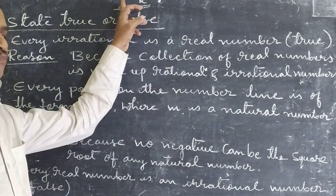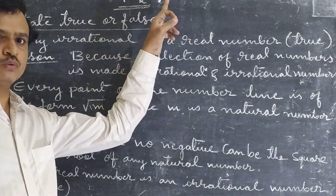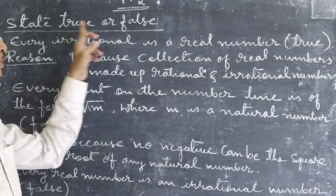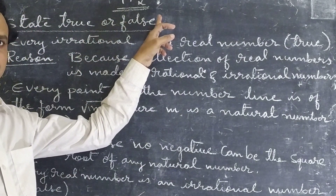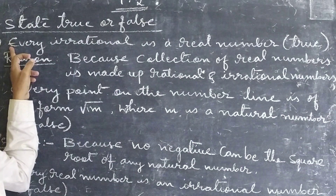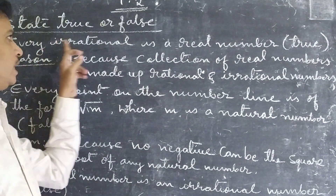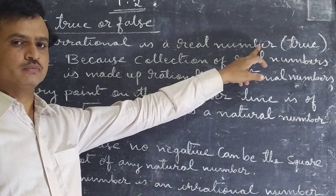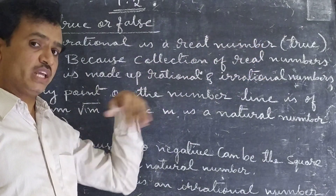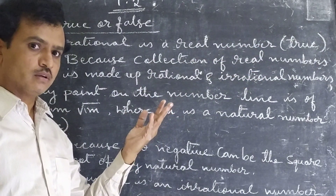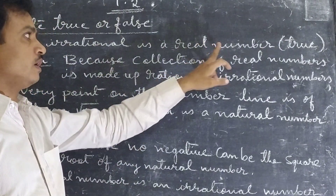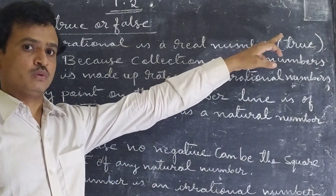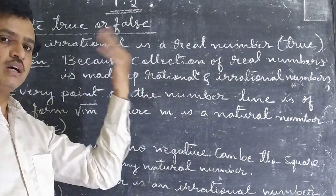Exercise 1.2. In this first domain, state true or false. First question: Every irrational is a real number. Yes, it is true. Every irrational number is a real number.